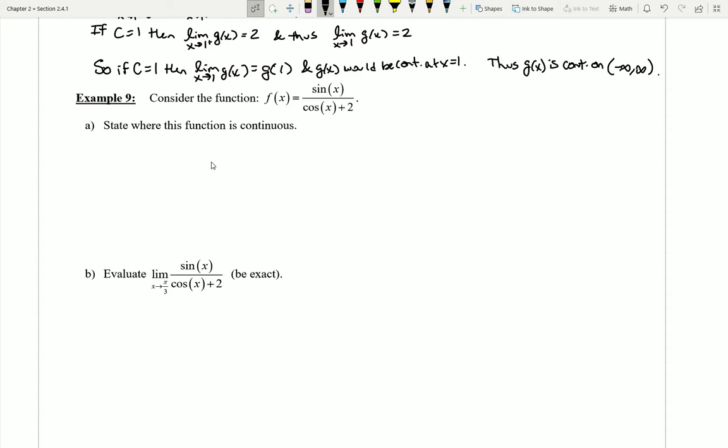Much like we've seen in the past couple videos, we're going to use the theorems that we've been talking about to help us determine this. A couple things that we can see right off the bat is that sine of x is continuous for all real numbers, or that is, it is continuous on the interval from negative infinity to infinity.